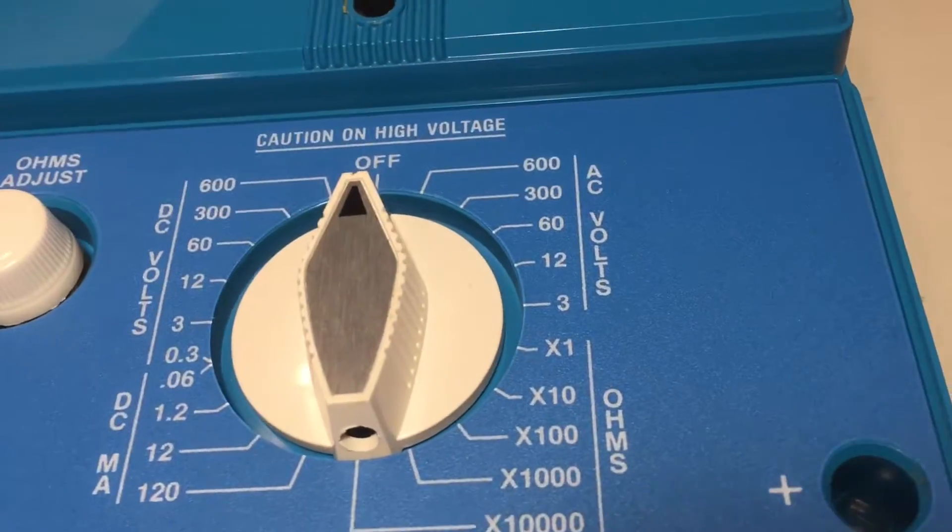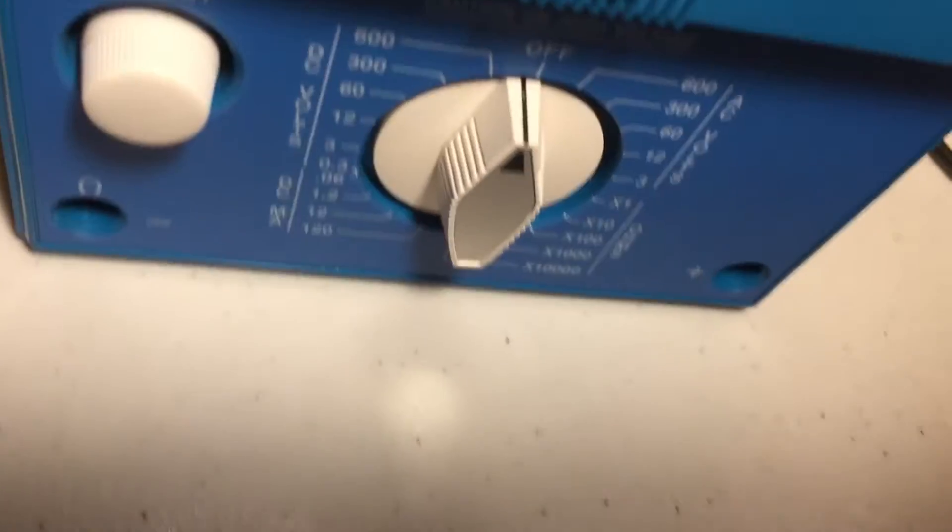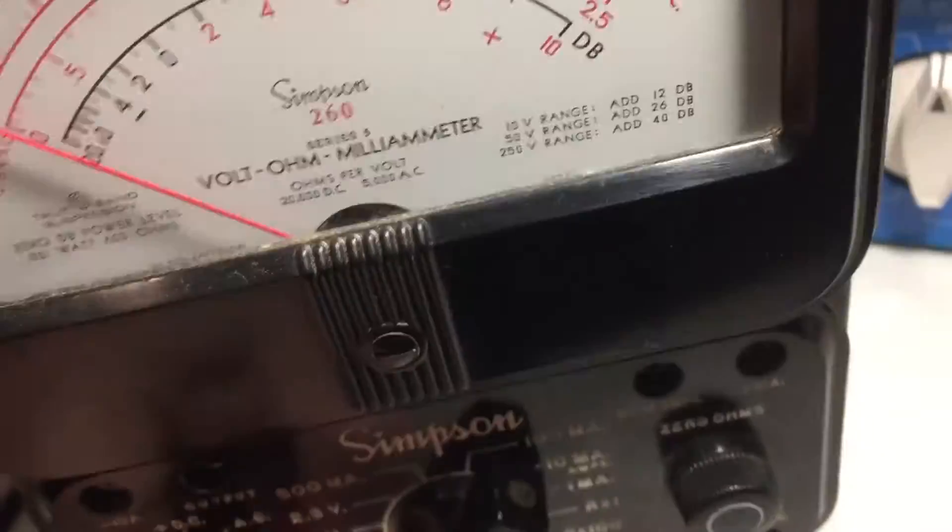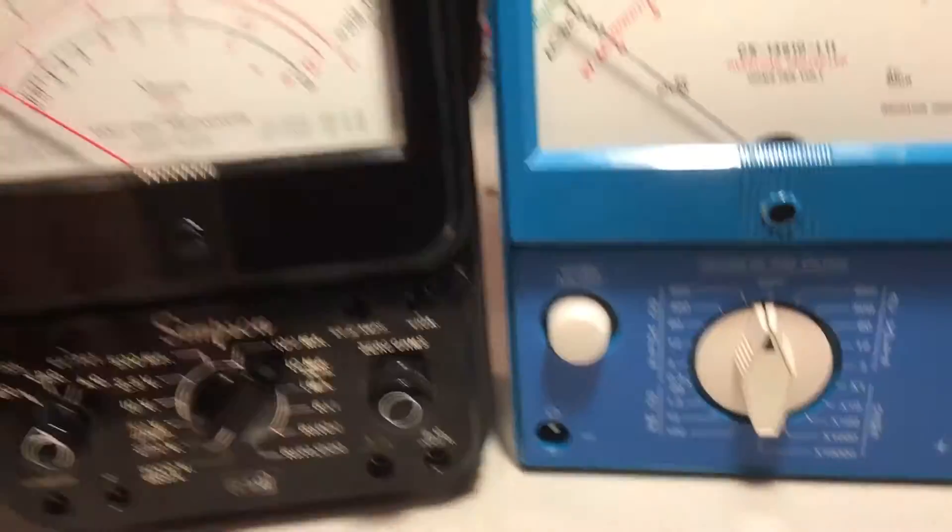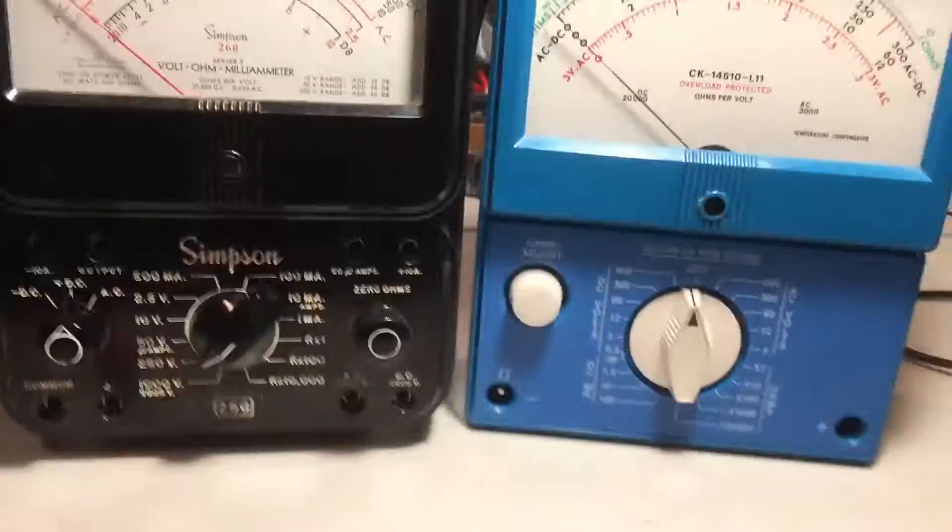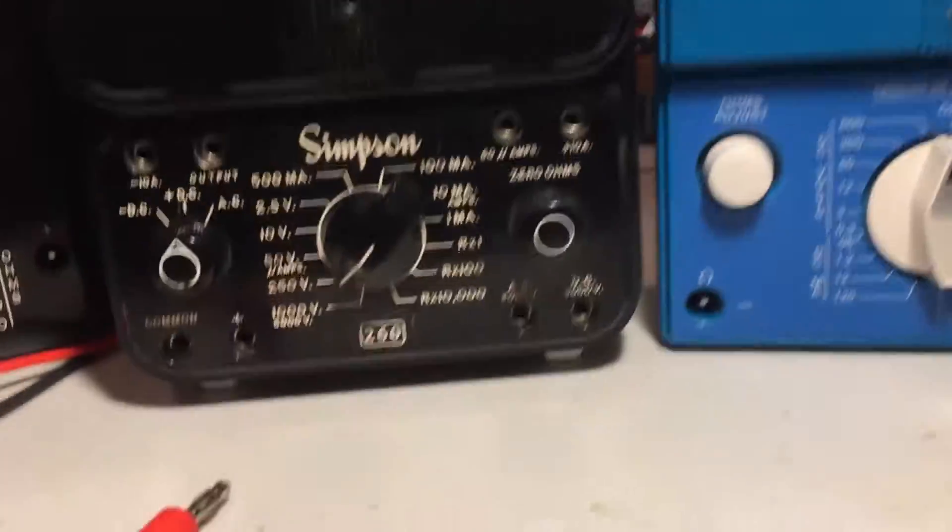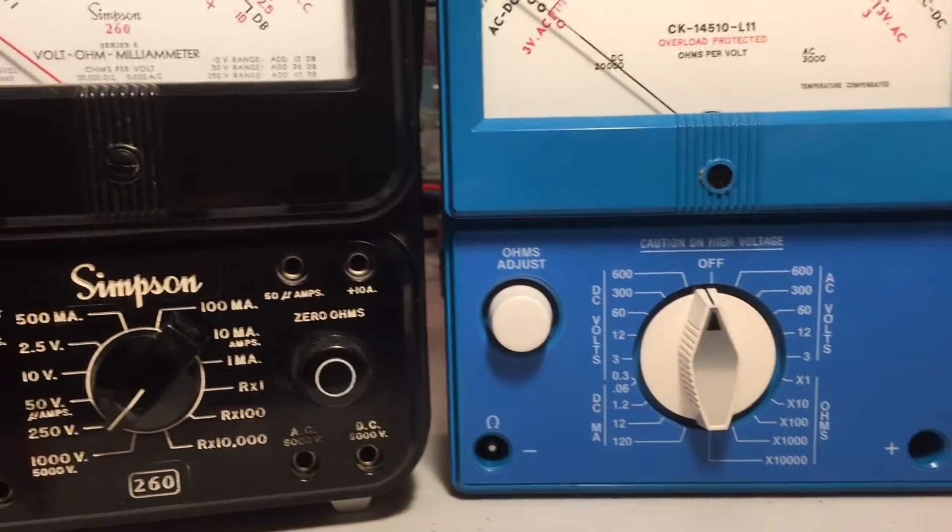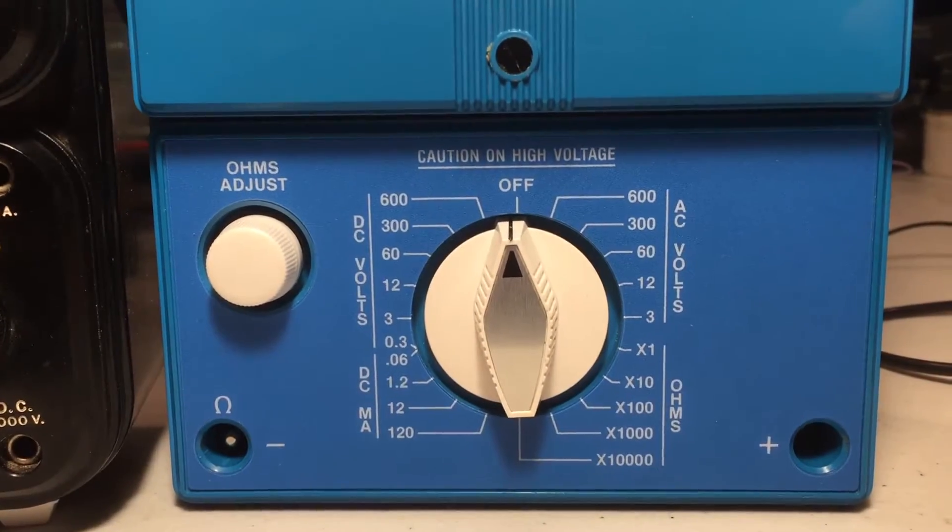Let me compare these. Let me compare this guy to a Simpson 260. This is a Simpson 260 that I frequently just use to measure things with an analog meter. Works quite well. You can see that the ranges are completely different on the Simpson 260. Now this is a series three by the way versus the Bell system version.